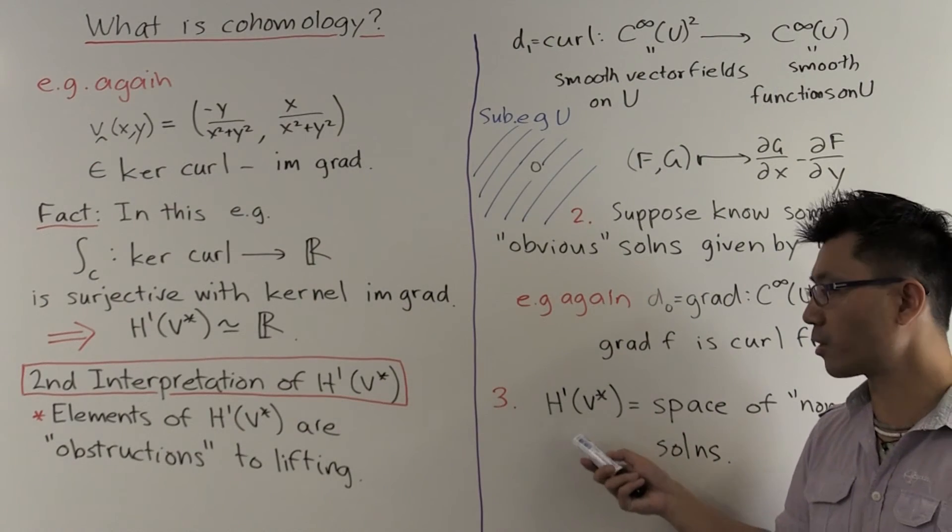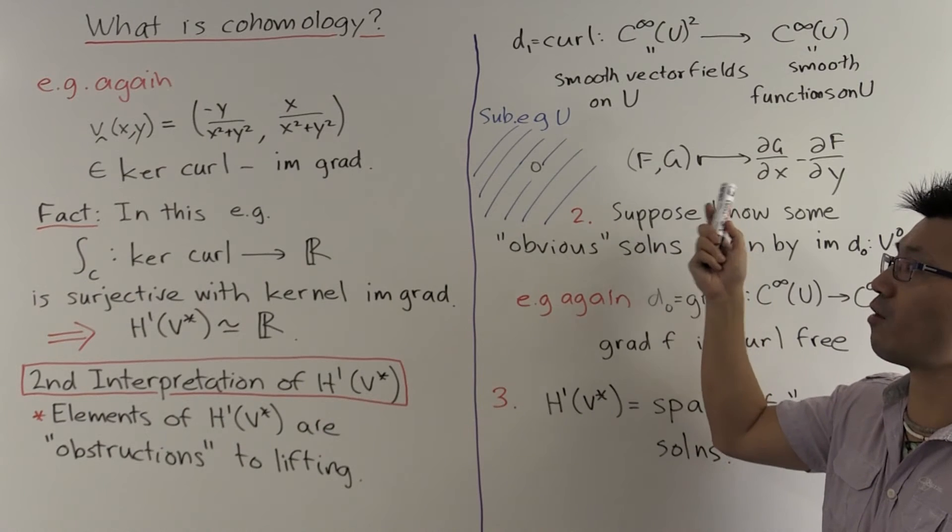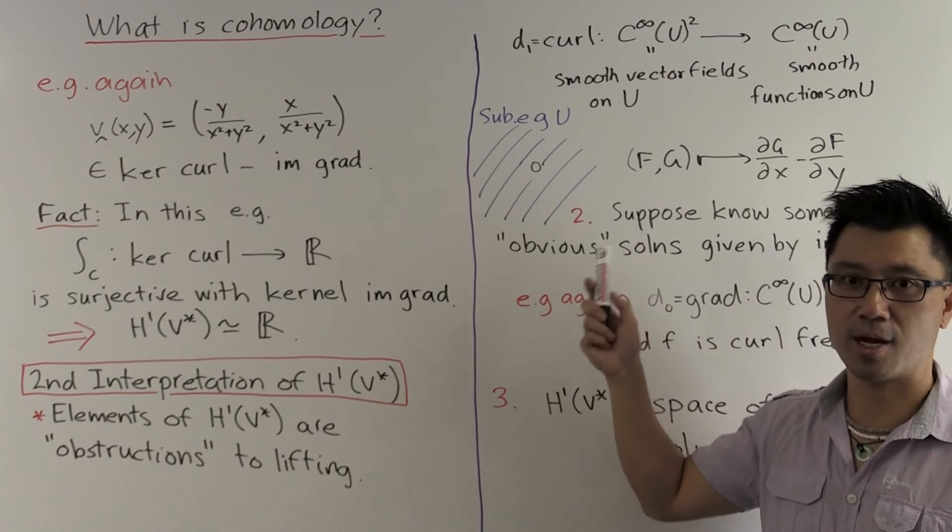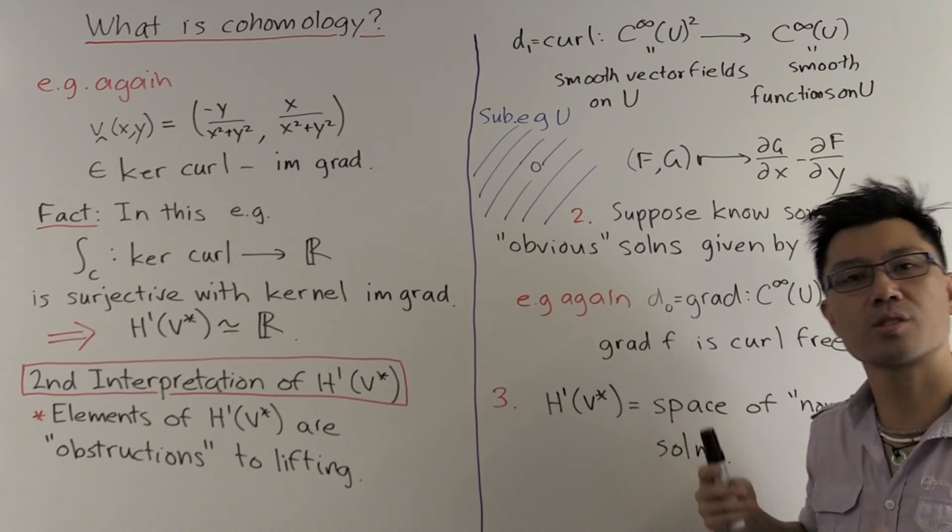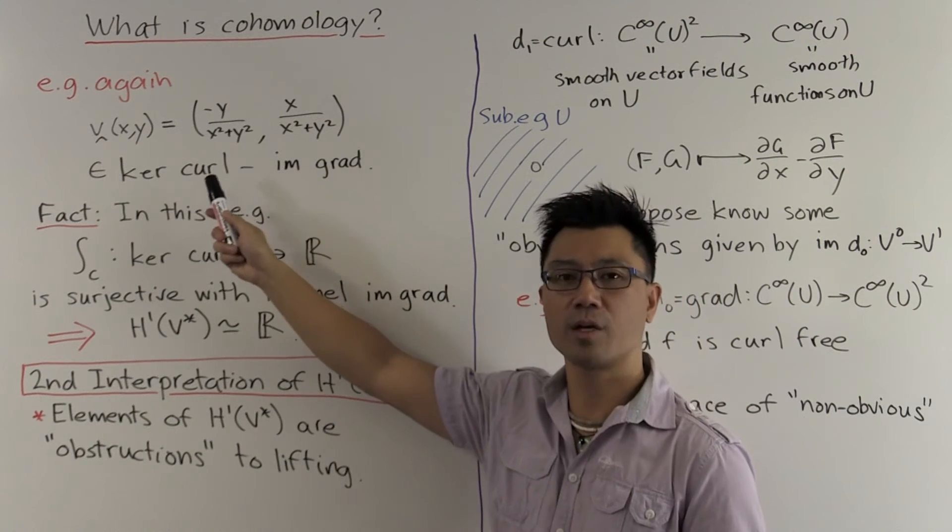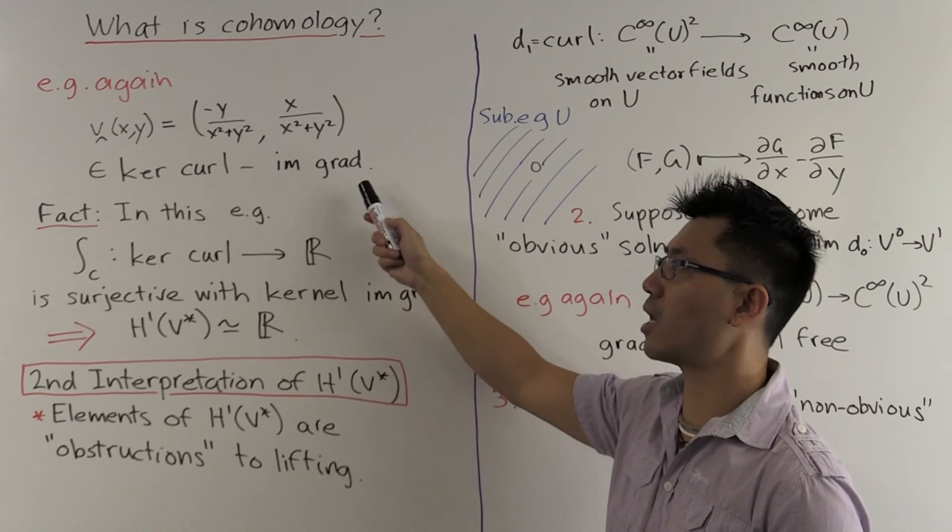And what was image of d0? Our interpretation of that was this is the space of some obvious set of solutions. So the set of solutions, modulo the space of obvious solutions. Of course, that means that you can interpret H1 now as the space of non-obvious solutions. So let's see what this first cohomology looks like in the special case of our example here, where you use the linear maps, the curl and the gradient.